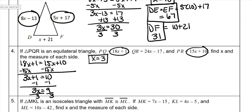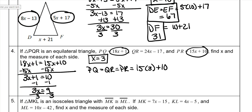Then we have to find the measure of each side. Well, this is an equilateral triangle, so they're all equal to each other. You just choose one side equation — it doesn't matter which one — and plug x in. I'm going to use the one with 15 just because it's smaller. So 15 times 3 plus 10 would be 45 plus 10, so 55 for all three sides.